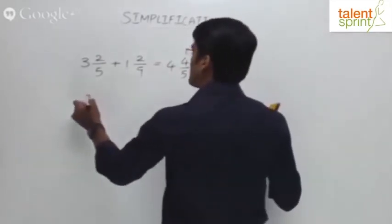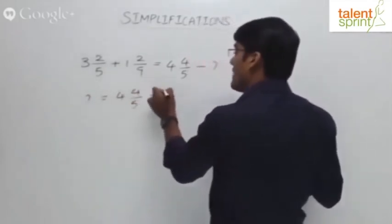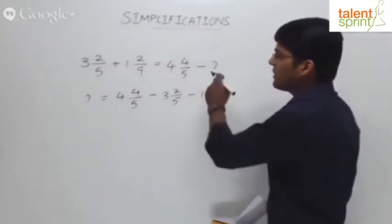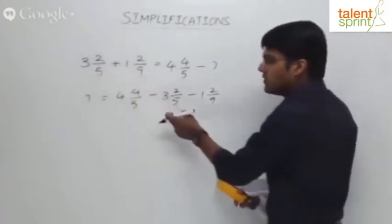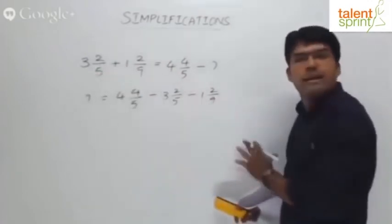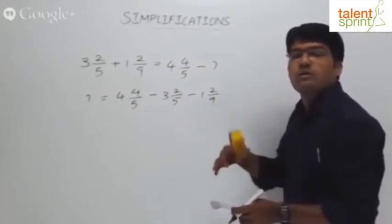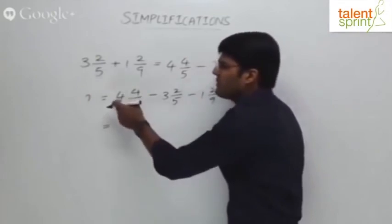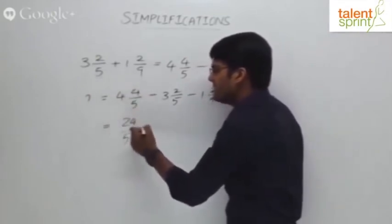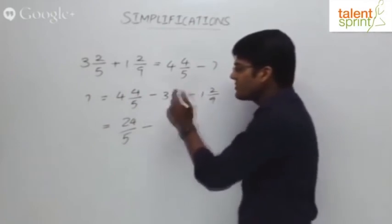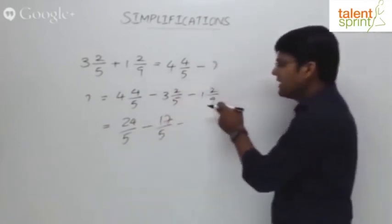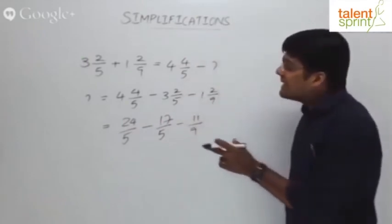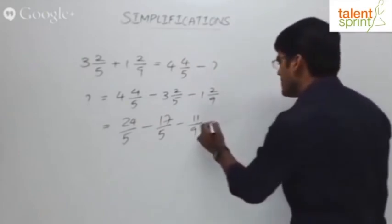The question mark will be equal to 4 and 4/5 minus 3 and 2/5 minus 1 and 2/9. The question mark moves to one side, so 4 and 4/5 becomes 24/5, minus 3 and 2/5 becomes 17/5, minus 1 and 2/9 becomes 11/9.